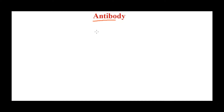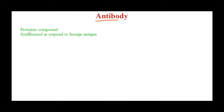Welcome back. Today we are covering the structure of antibody and all the different terms related to antibody structure, and why they are named so. An antibody is a proteinic compound — we produce antibodies in response to foreign antigens. That means antibodies are produced in our body to fight against foreign antigens, and antibodies are very specific to the particular type of antigen encountered.